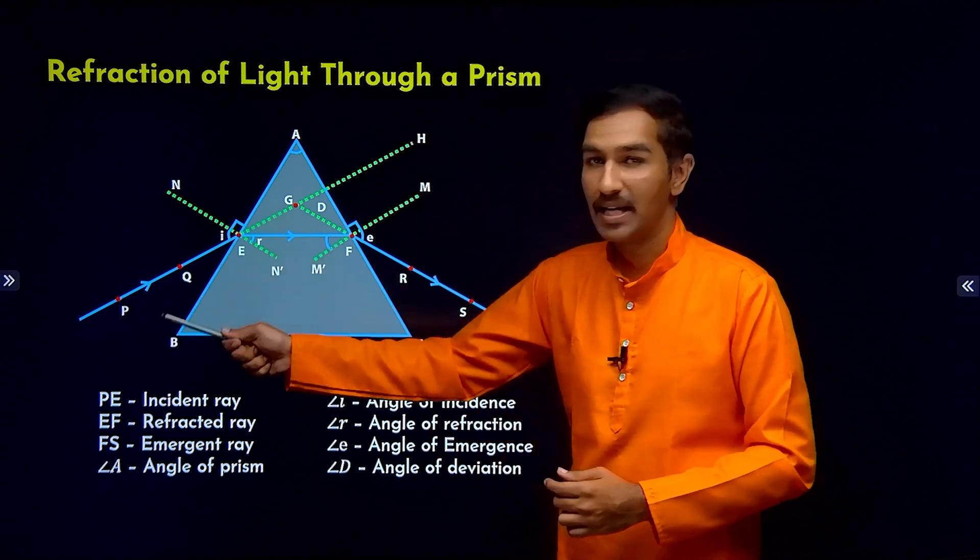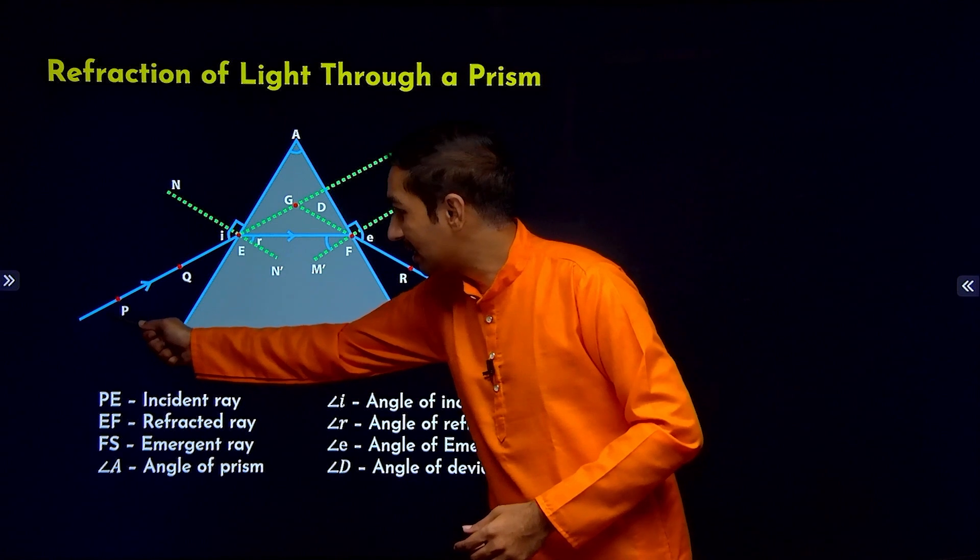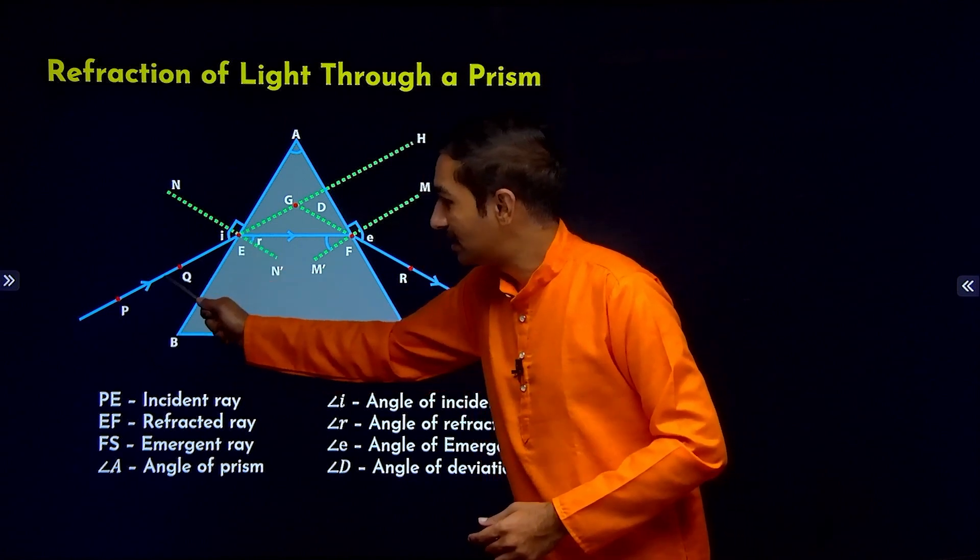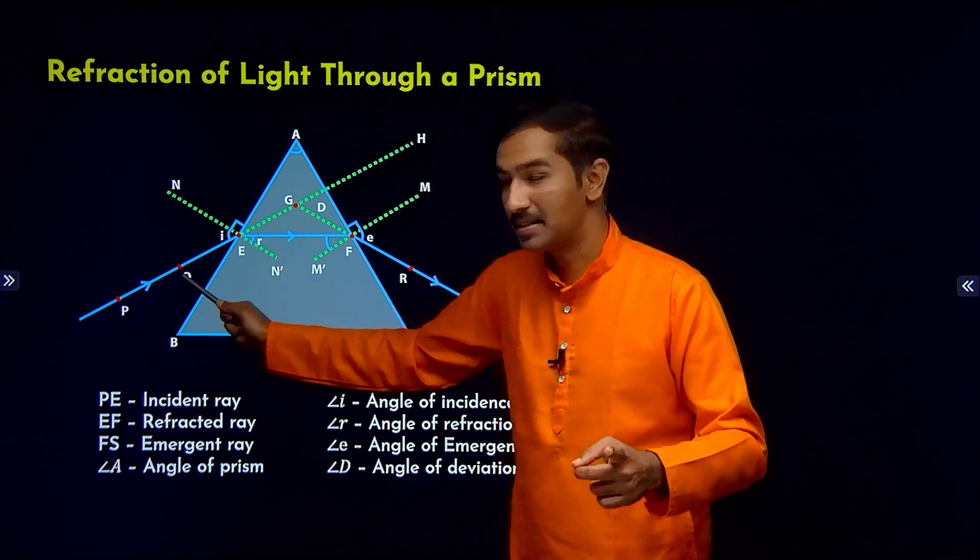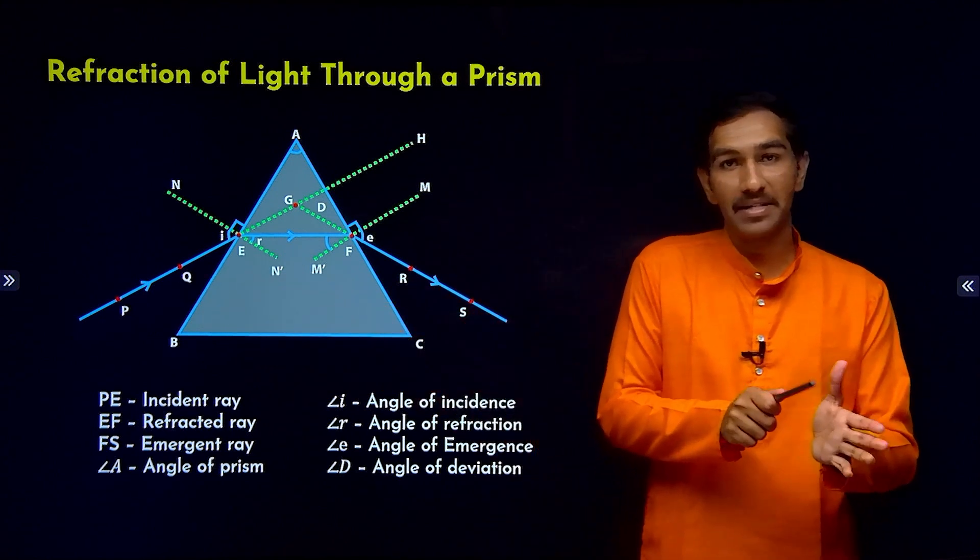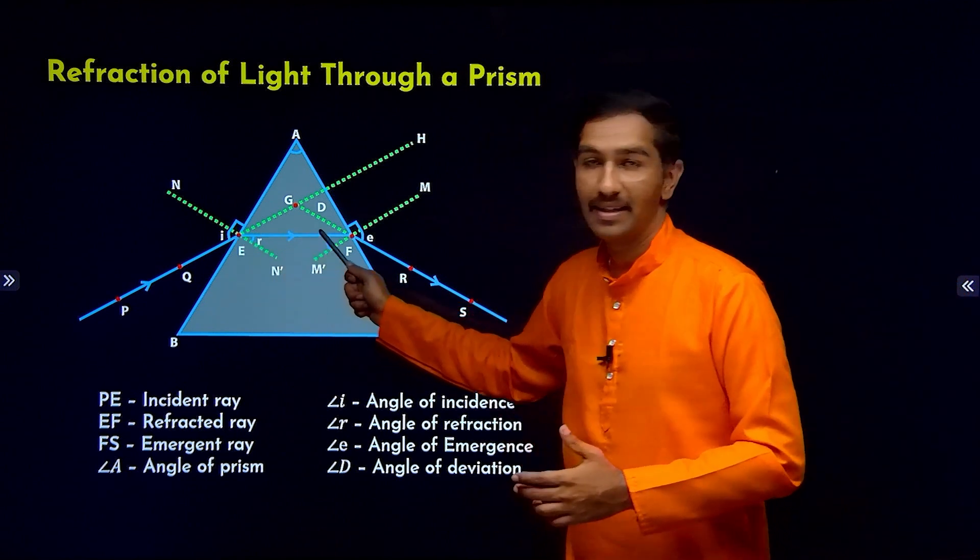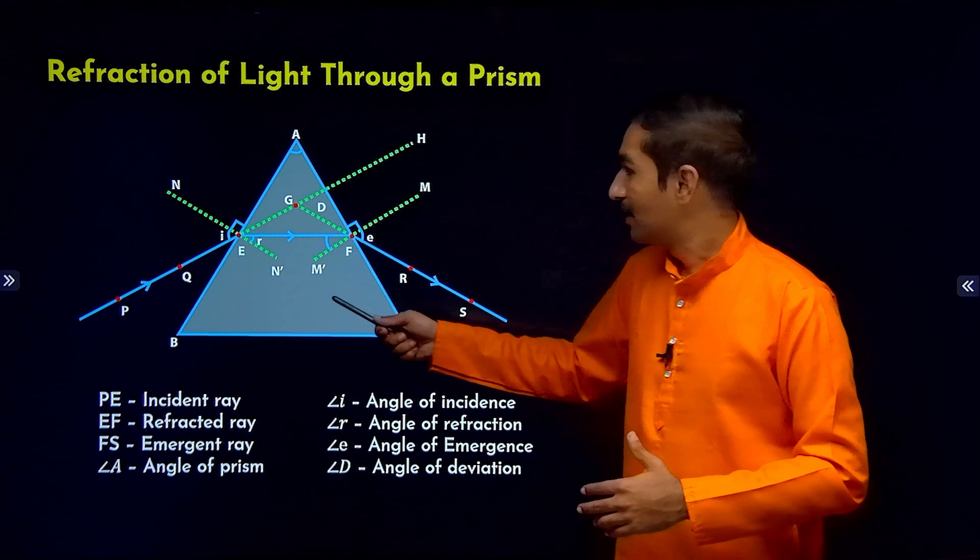Here we have a ray incident on the surface of the glass. So when the ray is incident, this ray of light is passing from rarer medium to the denser medium. So whenever a ray of light passes from rarer medium to denser medium, refraction occurs - bending of light occurs.